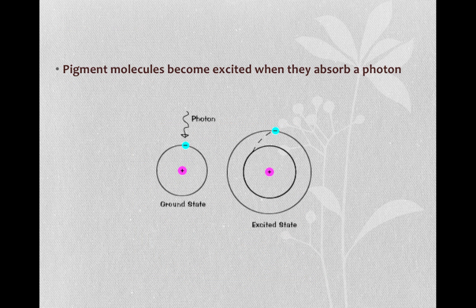Pigment molecules become excited when they absorb a photon. What that means is when they become excited, an electron jumps up energy levels. The ground state is normal, and the excited state is when the atom absorbs energy and electrons start to jump up energy levels away from the nucleus. Since each color in the visible spectrum has a specific wavelength, therefore a specific energy, a molecule will only absorb a photon with the exact amount of energy equal to the difference between the ground and the excited state.